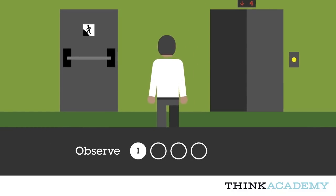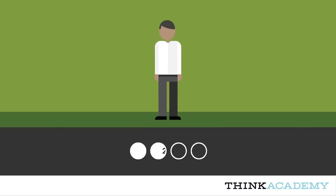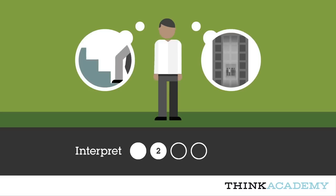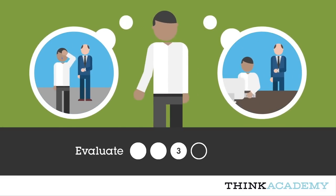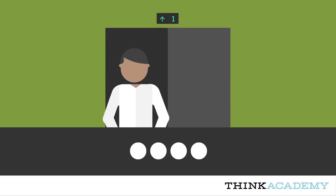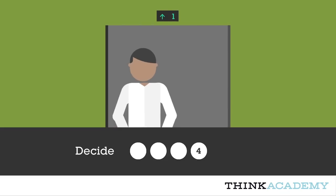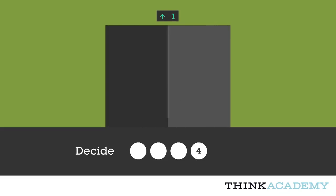First, we observe visible phenomena and bodies of evidence. Second, we draw on what we know to interpret what we're seeing, to generate hypotheses about what it means. Third, we evaluate which hypotheses are right or wrong. Finally, we decide, choosing the option that seems best and acting accordingly.